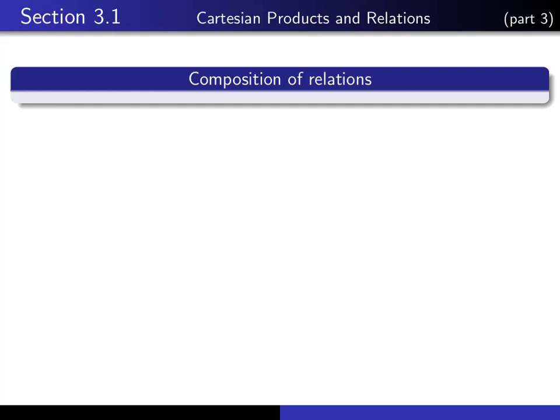This is part 3 in our series of lectures on section 3.1 on Cartesian products and relations. In this lecture we talk about the composition of relations.